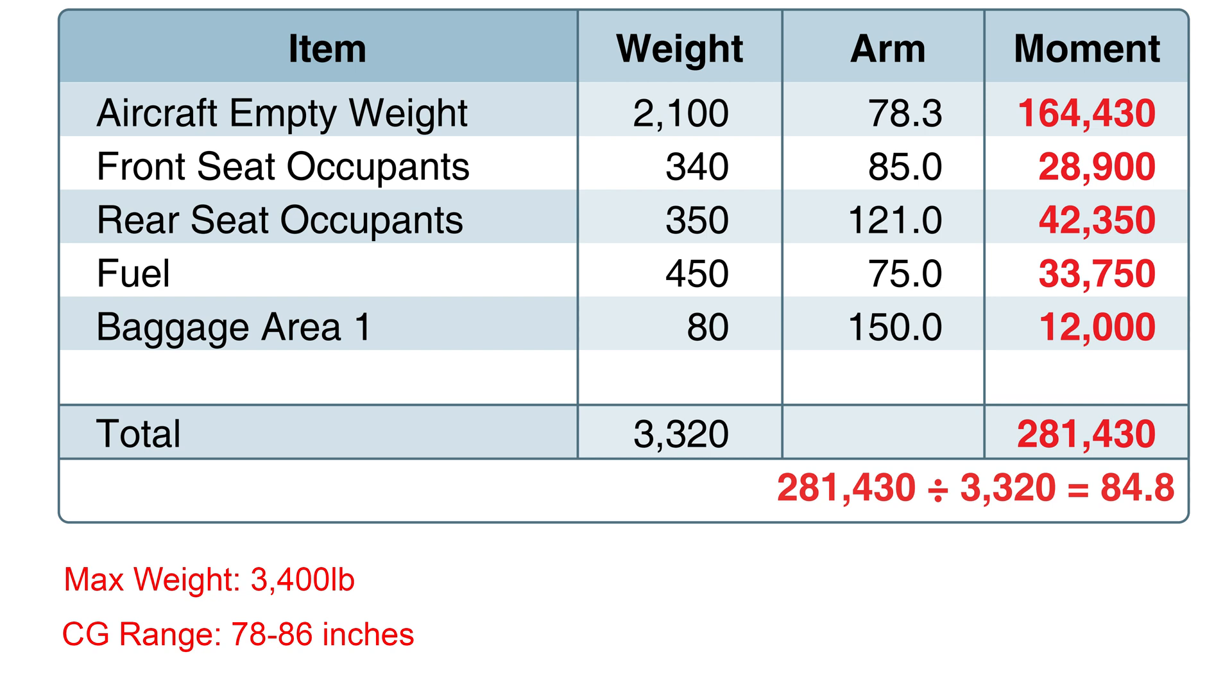Next, we have rear and front human occupants and luggage with the respective weights and arms. The first step is to multiply the weight of each item by its arm. Next, compute the total weight and the total moment of all items on the aircraft by summing them up.